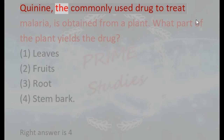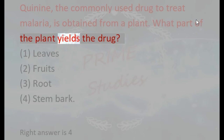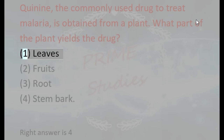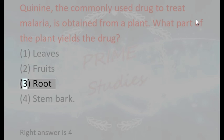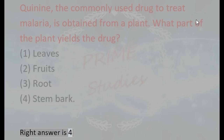Quinine, the commonly used drug to treat malaria, is obtained from a plant. What part of the plant yields the drug? 1. Leaves, 2. Fruits, 3. Root, 4. Stem bark. Right answer is 4.